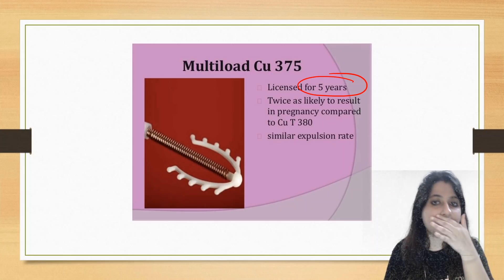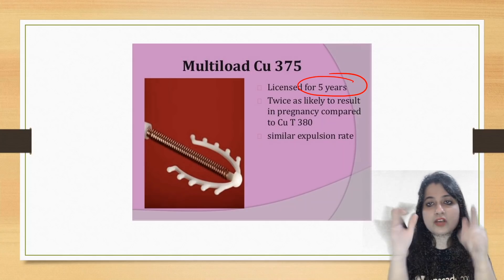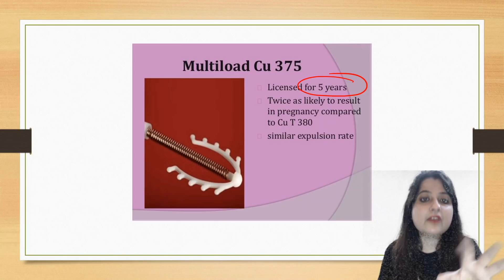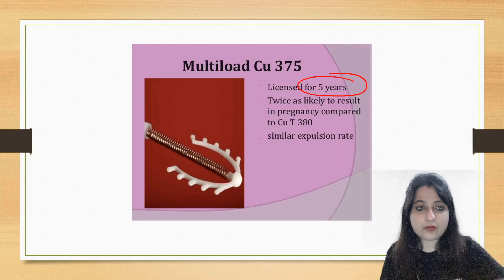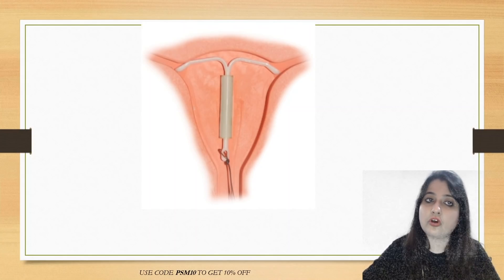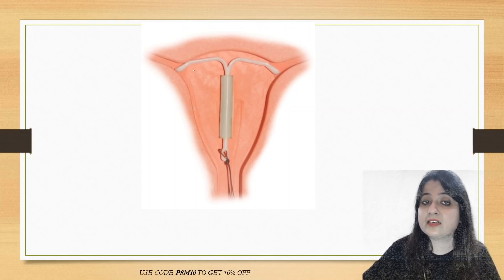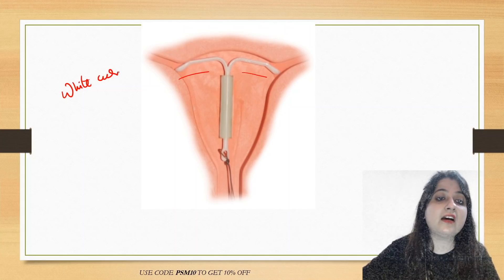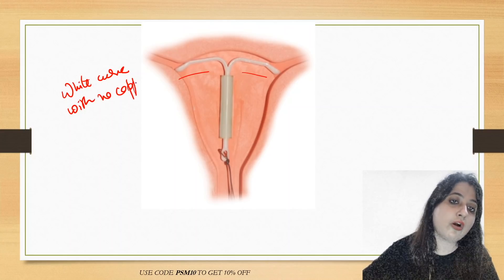So what have we seen so far? Copper T380A has a complete T-shape with copper wire on both horizontal and vertical stems. Nova T is curved with copper wire only on the vertical stem and has silver metal attached to it. Multiload is U-shaped — that is Copper T375. Now look at this one — a completely white device with no copper wire — white curve with no copper wire.